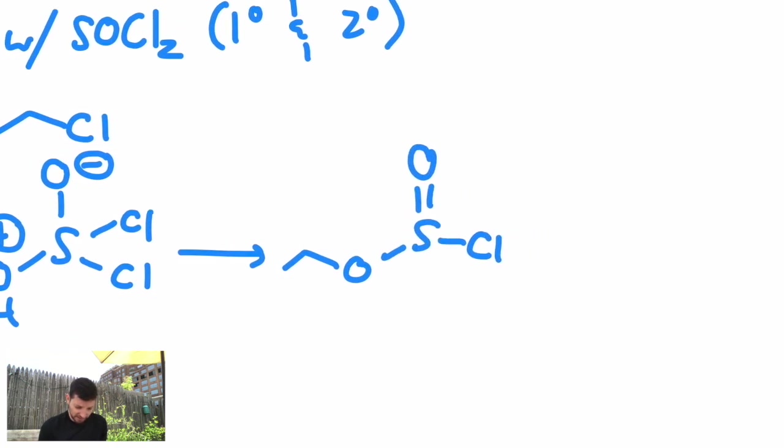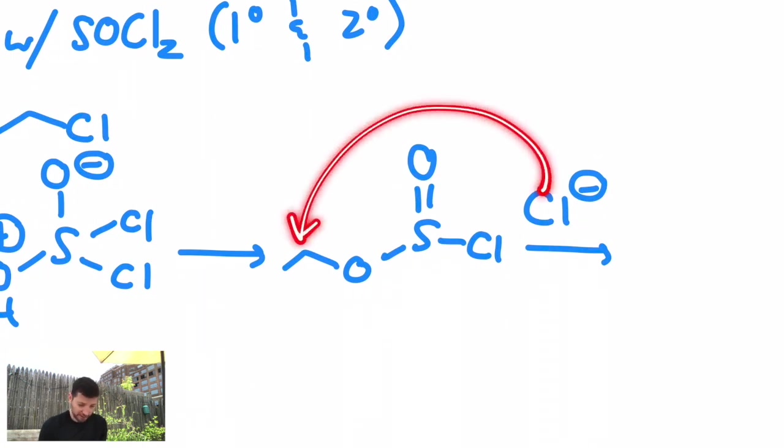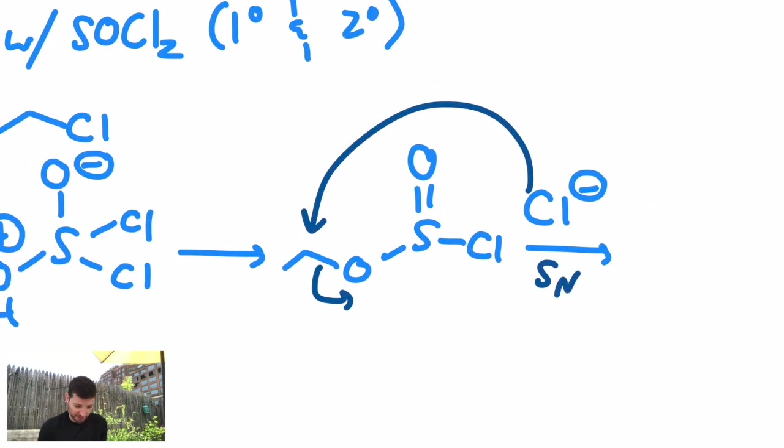And it's this species that gets attacked by a chloride ion. So the chloride will actually attack that carbon, kick out that oxygen in SN2. In fact, I'll show the arrows for that, because that means if I do this on a molecule that has stereochemistry, you'll get the inversion of stereochemistry.